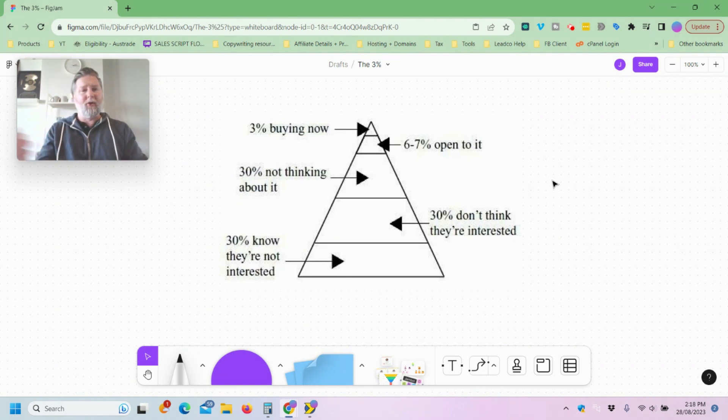All right. So this little diagram here is from Chet Holmes's book called The Ultimate Sales Machine. And what he talks about is that there is only around 3% of the marketplace that are ready, willing and able to make a purchasing decision in the immediate future.